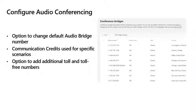Configuring audio conferencing. Although this option is optional and not often used, sometimes companies might want to change the default audio bridge number or add additional toll and toll-free numbers. Keep in mind that if you advertise a toll-free number as your default number for audio conferencing, communication credits will be used for that specific scenario.